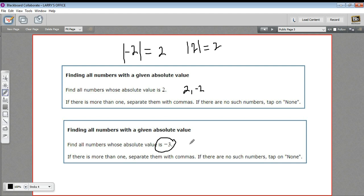So in this case, there's nothing whose absolute value is negative 3. So that is a little bit of work with absolute value.